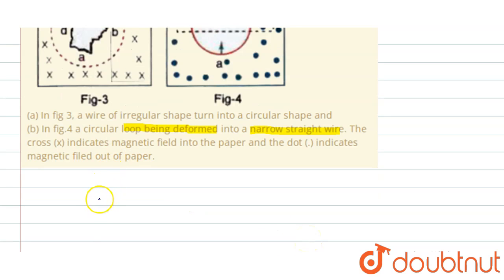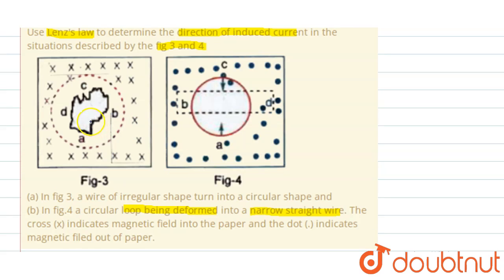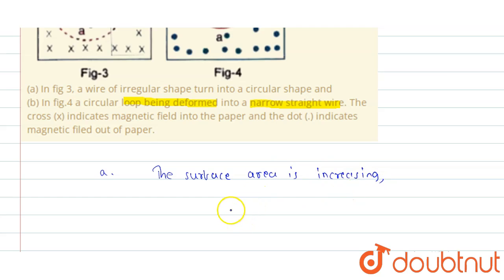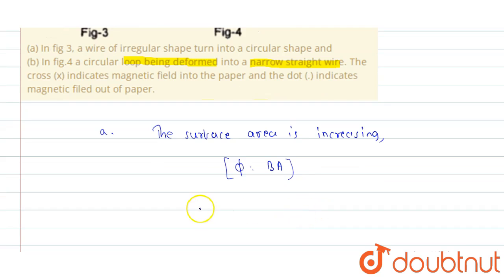Now, in the first case in figure 3, the irregular shape is being turned into a circular shape. While this transformation occurs, we can clearly see the surface area is increasing. Since magnetic flux phi equals B multiplied by area, as the area is increasing, we can say the magnetic flux is also increasing.